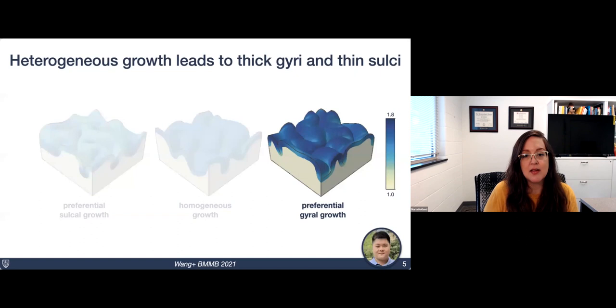What we found was that the preferential gyral growth simulations best matched the data that we see in human brains. We analyzed over 500 human brains and saw that the patterns in those brains best match this case of preferential gyral growth. Just a note: in the simulations, the colors indicate the amount of growth happening with darker colors representing more growth.